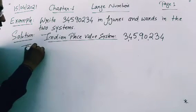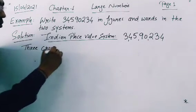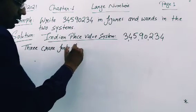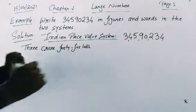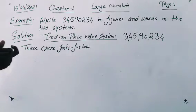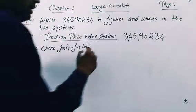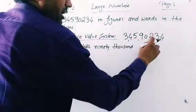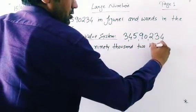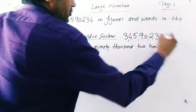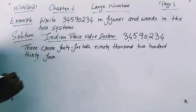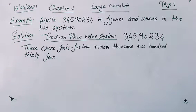Then it will also be based on lakh and ten lakh. So you can write it here in words: 3 crore, 45 lakh, 90,000, then 200, 34. So on the basis of this method, we can easily write any number in the Indian place value system.